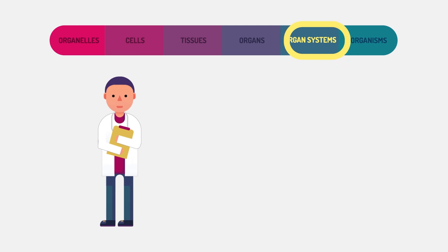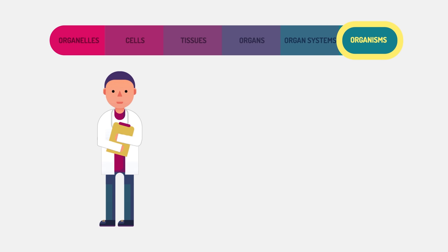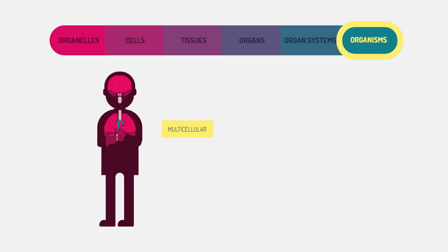Organisms are entire living things that can carry out all basic life processes. Multicellular organisms are made up of organ systems, but unicellular organisms such as bacteria or protists are made up of one cell.